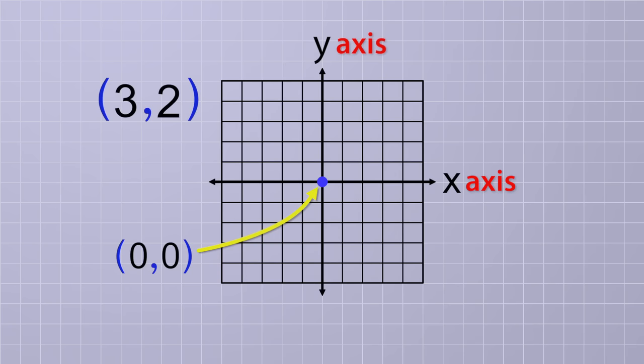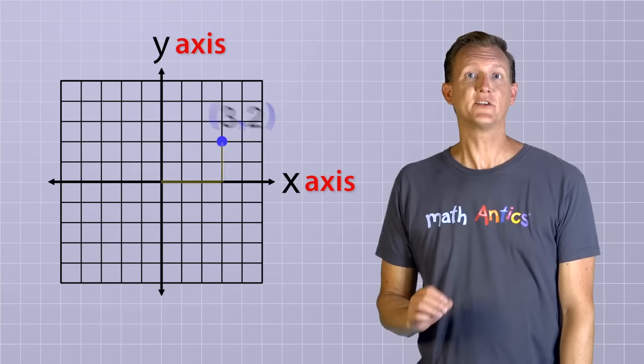For example, to plot the coordinates (3, 2) like before, we start by imagining a point at the origin (0, 0). Then we look at the first number in our ordered pair to see how far we need to move our point in the x direction. Since x is positive 3, we move our point a distance of 3 units in the positive x direction. And then from there, since y is positive 2, we move our point a distance of 2 units in the positive y direction. So that's a pretty easy method for plotting points. Let's try it a few more times so you get the idea.